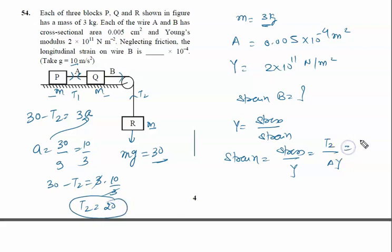Here we will apply T2 is 20 N, area is 0.005 × 10^-4, so it is 10^4 in the upper side. And Young's modulus is 2 × 10^11.